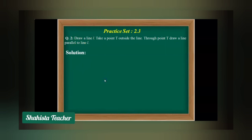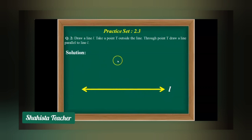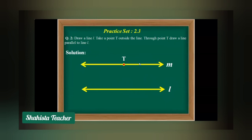First we have to draw line L. Now take a point T outside the line. After this we have to draw one line which is parallel to L. After plotting the line, we will label it M. So line L is parallel to line M, and T is the point outside line L.